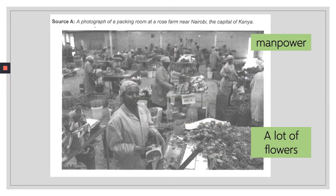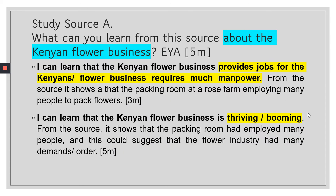Source A is a photograph showing a rose farm near Nairobi, the capital of Kenya. From the picture itself you cannot see anything to do with airplanes or global air transport, but you can see many ladies sorting flowers and a large quantity of flowers.